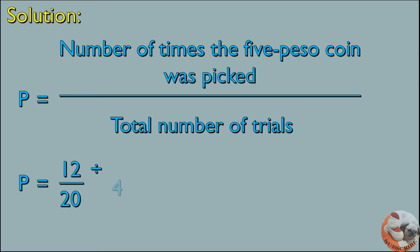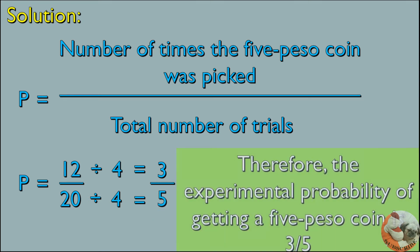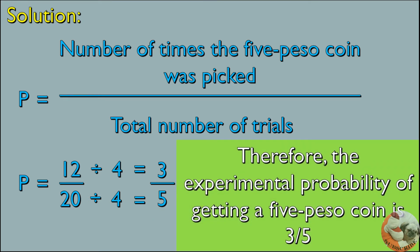Simplify by dividing both the numerator and the denominator by 4. 12 divided by 4 is equal to 3, and 20 divided by 4 is equal to 5. Therefore, the experimental probability of getting a 5-peso coin is 3 fifths, or 3 out of 5.